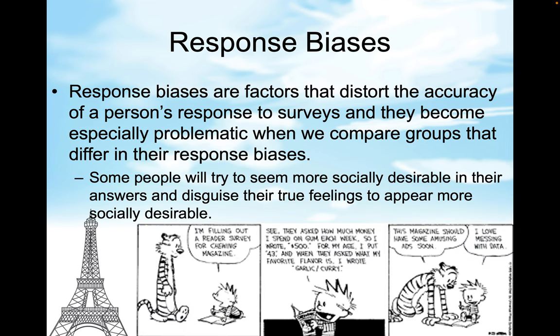Response biases are factors that distort the accuracy of a person's response to surveys, and they become especially problematic when we compare groups that differ in their response biases. Some people will try to seem more socially desirable in their answers and disguise their true feelings to appear more socially desirable. People don't always present the real person that they are.